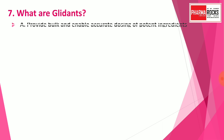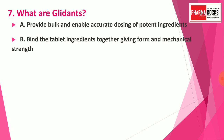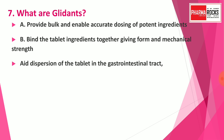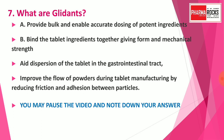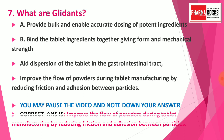Question number seven: What are glidants? Option A: Provide bulk and enable accurate dosing of potent ingredients. Option B: Bind the tablet ingredients together giving form and mechanical strength. Option C: Aids dispersion of tablet in the gastrointestinal tract. Option D: Improve the flow of powders during tablet manufacturing by reducing friction and adhesion between the particles. The correct answer is Option D.